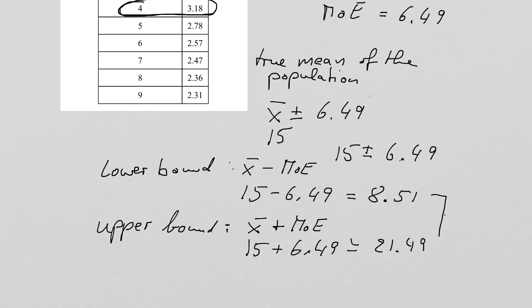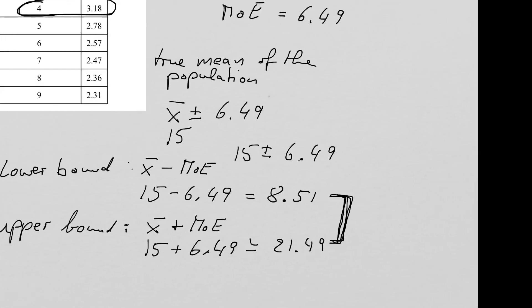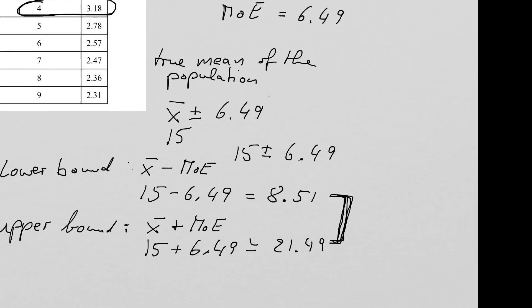So the true mean of this population — if we did this experiment a billion times — we would expect it to be somewhere between 8.51 and 21.49. We cannot be much more precise than that, but it gives us a good range where we would predict the true mean of all possible data sets.